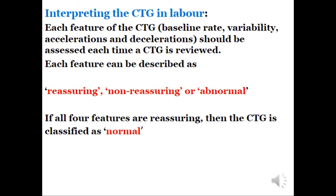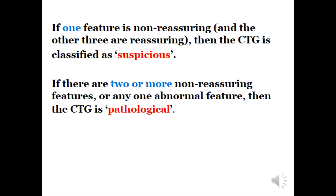Interpreting the CTG in labor: each feature — baseline rate, variability, accelerations, and decelerations — should be assessed each time the CTG is reviewed. Each feature can be described as reassuring, non-reassuring, or abnormal. If all features are reassuring, the CTG is classified as normal. If one feature is non-reassuring and the other three are reassuring, the CTG is classified as suspicious. If there are two or more non-reassuring features, or any abnormal feature, the CTG is classified as pathological.